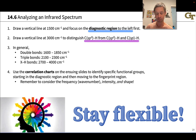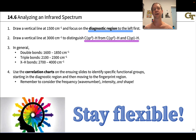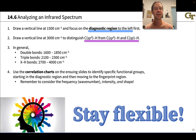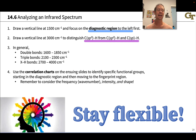As general guidelines — and rules are made to be broken — double bonds appear around 1600 to 1850 wavenumbers, triple bonds from 2100 to 2300 wavenumbers, and X-H bonds anywhere between 2700 and 4000 wavenumbers depending on the nature of X, whether carbon, nitrogen, oxygen, and so forth.